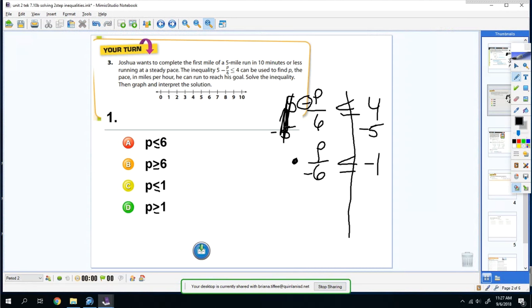And so that would be still less than or equal to 4 minus 5 is negative 1. So I'm going to multiply both sides by negative 6. That's p. My sign in the middle will switch, because I just multiply both sides by a negative. Negative 1 times negative 6 is a positive 6. And the answer will be b.